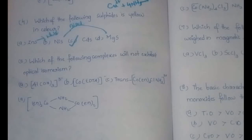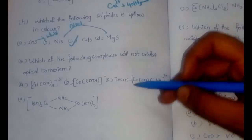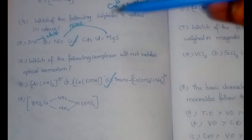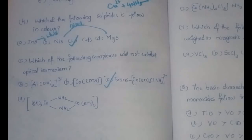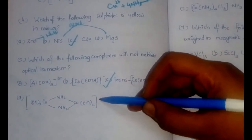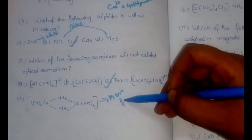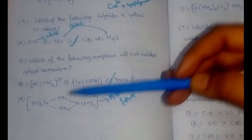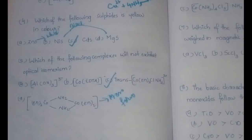Question 5: which of the following complexes will not exhibit optical isomerism? For optical isomerism, the complex must have no enantiomers. The answer is option C — trans-[Co(en)₂Cl(NH₃)]²⁺ — because it is the trans isomer and therefore not chiral. Options A, B, and D all have chiral structures and show enantiomerism, making them optically active. Additionally, option D also has a meso form along with two enantiomeric forms.